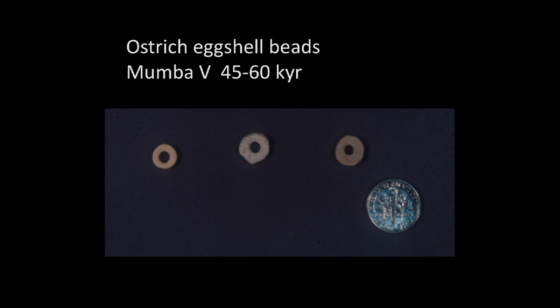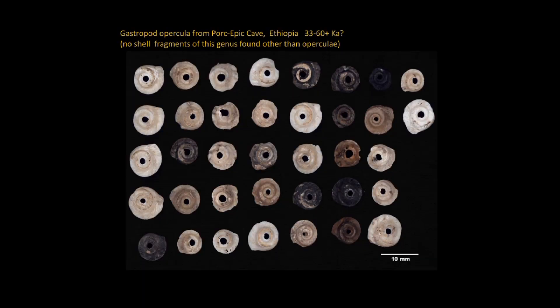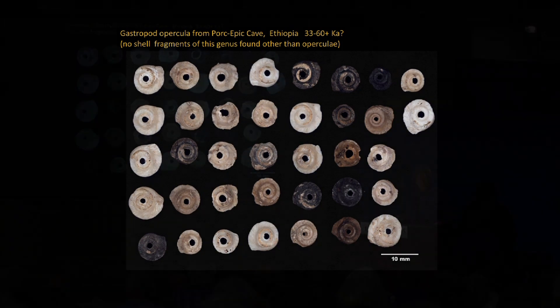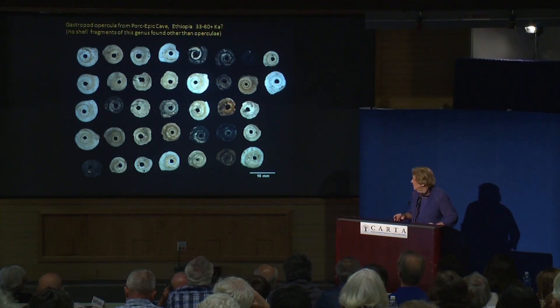These are ostrich eggshell beads from Mumba, again towards the top of the sequence. I was able to date one of these by amino acid racemization to 52,000 years ago, and there's recently been a similar date in the very early 40,000s for such a bead. These are from Porcupine Cave in Ethiopia, dated to 33 to 60,000 years ago. The argument is not necessarily that these are anthropogenic perforations, but that the distribution of these opercula in the complete absence of the rest of the shell suggests human agency in some way.